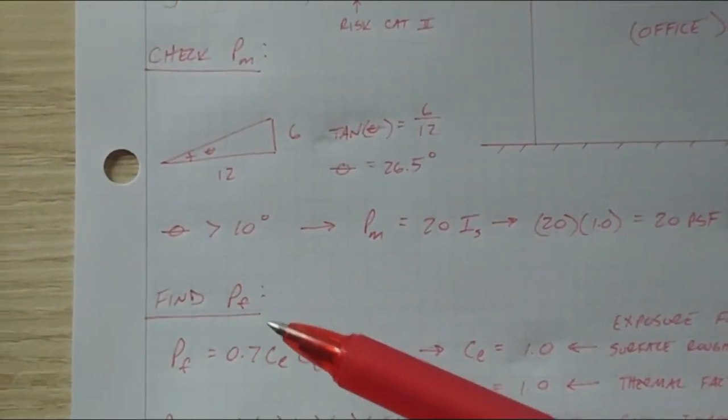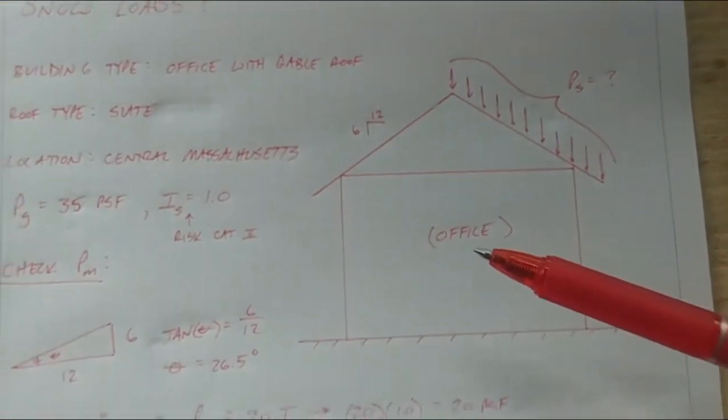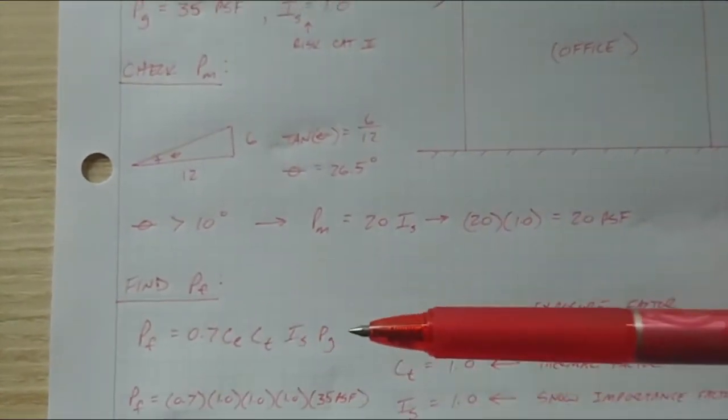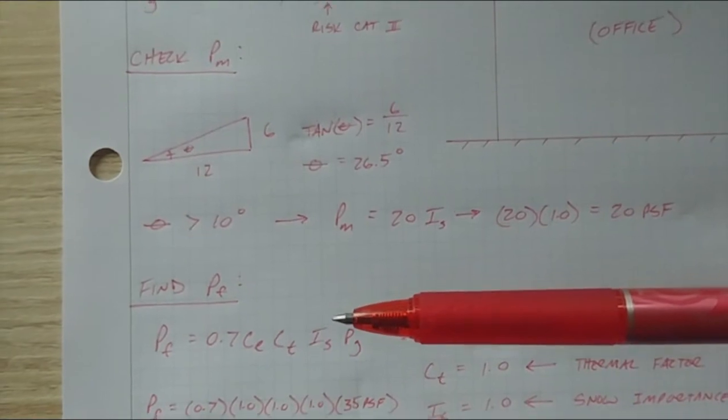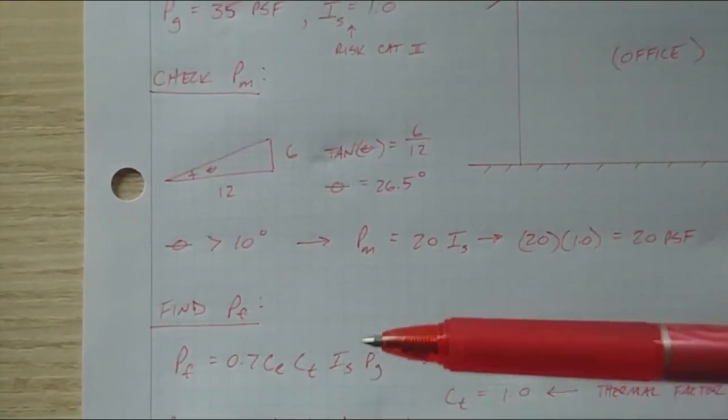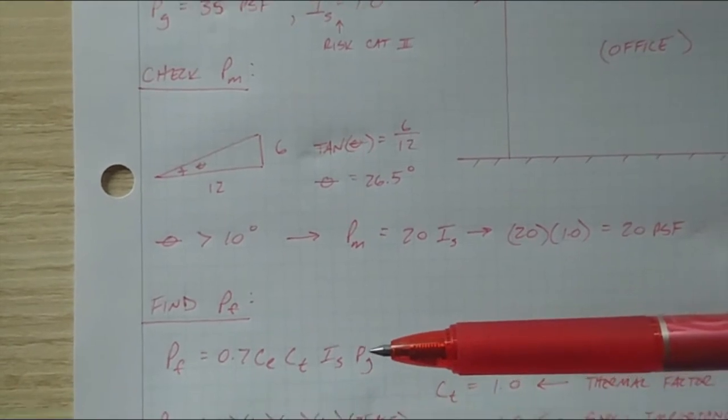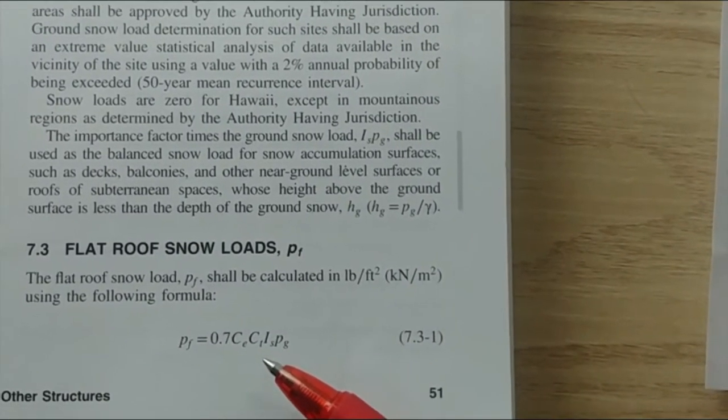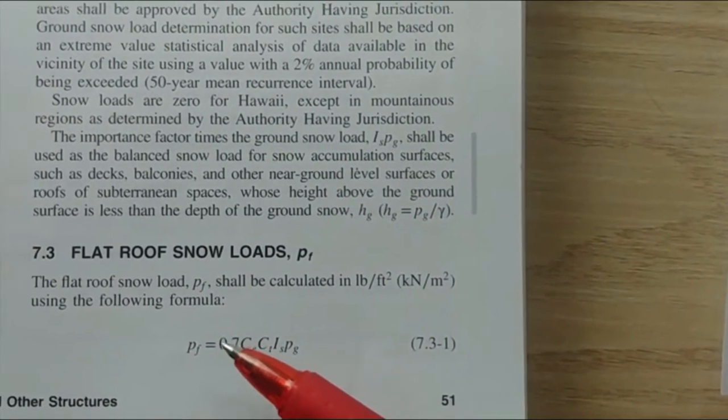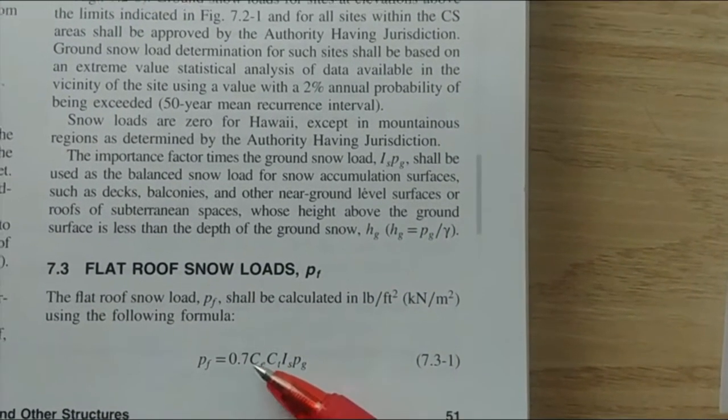Next, we need to find P sub F, which is actually your flat roof snow load. But you might be saying, well wait a minute, hang on, we got a sloped roof here. So why aren't we looking at sloped roofs? Well, you actually always start out with a flat roof snow loading value, and then depending on what type of roof geometry you have, you apply a different set of factors to get you that loading criteria. So we need P sub F. If you flip back to the initial page of chapter 7 and you go down here for flat roof snow loads, P_F equals 0.7 C_E C_T I_S P_G. We have I, we have P_G, we need C_E and C_T.